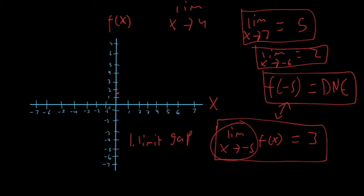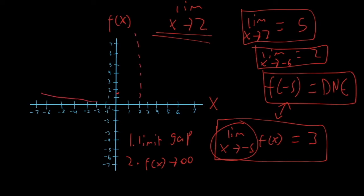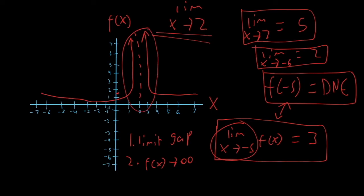Another situation is where f of x goes to infinity. For example, if I asked for the limit as x approaches two, but at that point the function shoots up like a vertical asymptote on both sides, there's really no finite functional value you can define. So this is another case where the limit does not exist.